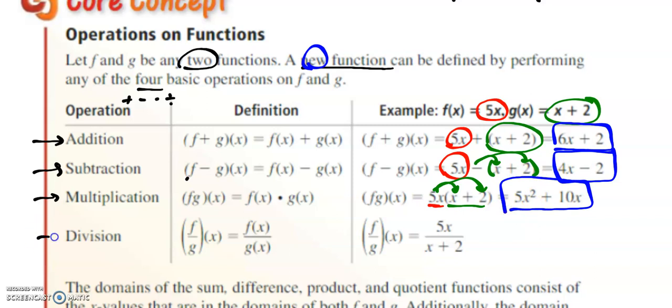And then finally, division for us. So f divided by g(x) is the same thing as f(x) divided by g(x). So here's my 5x function on the numerator and my x + 2 function in the denominator.